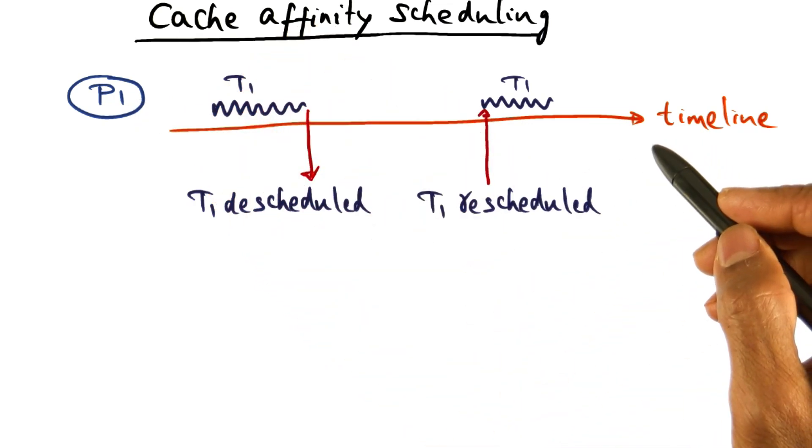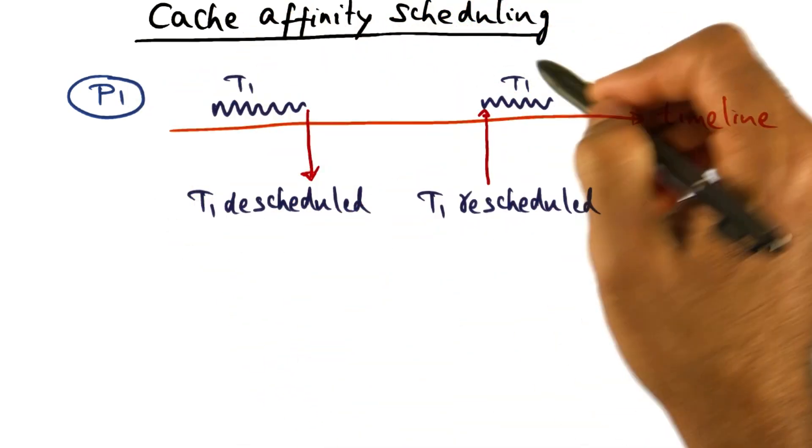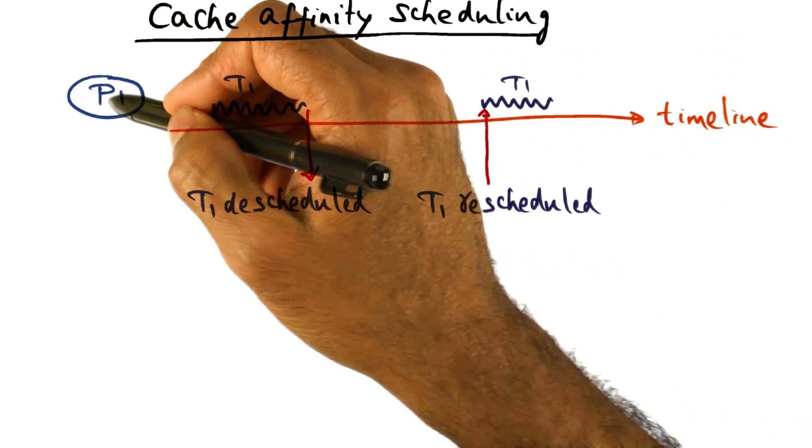That's the reason why it makes sense to look at the affinity of a particular thread to a processor—the cache affinity of a particular thread to a processor.